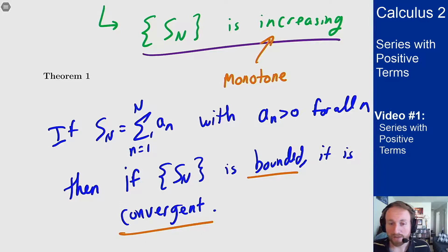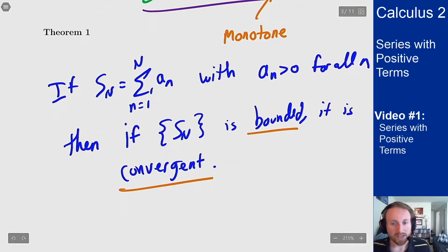So a lot of what we do in the next little bit, we'll talk about how can I show this is bounded. If I can show it's bounded, that gives me convergence. And conversely, if it's unbounded, then it must be divergent.